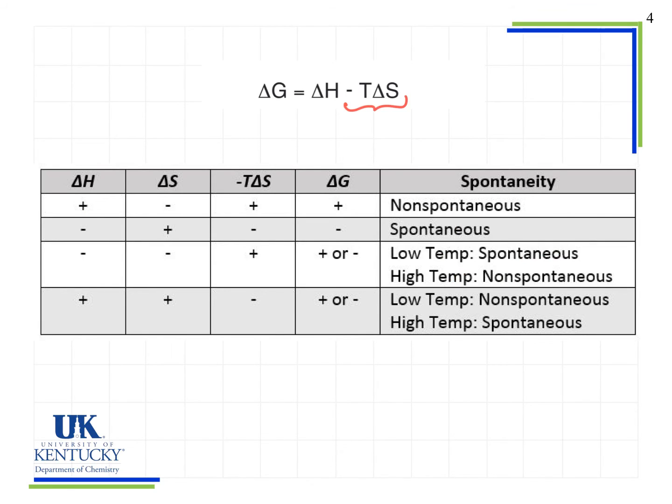We see something similar when we look at the values that are both positive for delta H and delta S. Our negative T delta S term is going to determine whether or not the delta H and T delta S combined is going to lead to a positive or negative delta G value.